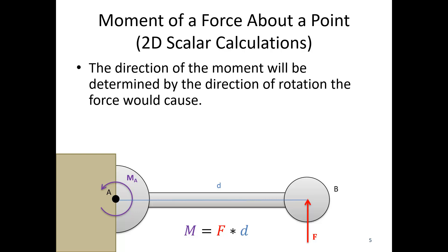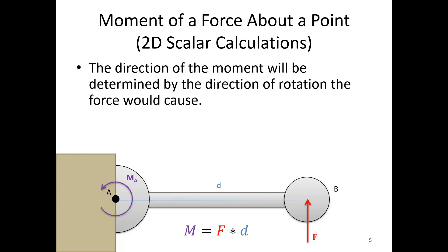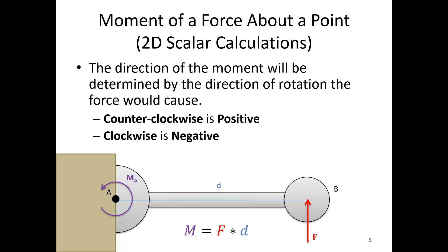To determine the direction, we're going to look at the direction of rotation the force would cause. Imagine holding down the body at the point you're taking the moment about — so here we're taking the moment at point A, so imagine holding down point A and then exerting that force. Think about which way the body is going to rotate about that point. In this case, if I'm holding it down at A and I push up at point B, this whole thing is going to tend to rotate counterclockwise. A counterclockwise rotation is considered a positive rotation. If the force causes a clockwise rotation, that is considered a negative rotation — so direction is just positive or negative in two dimensions.